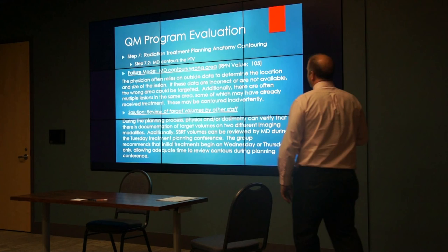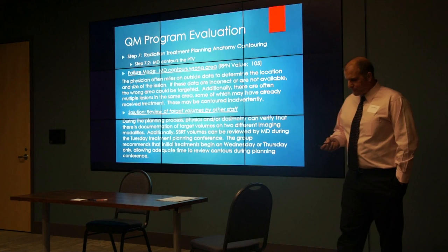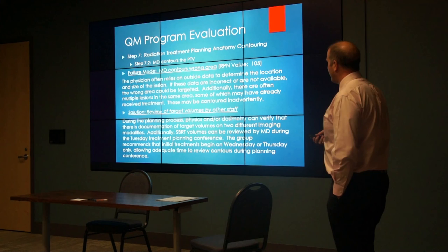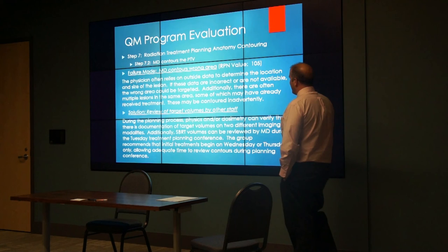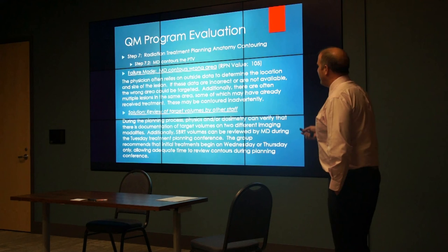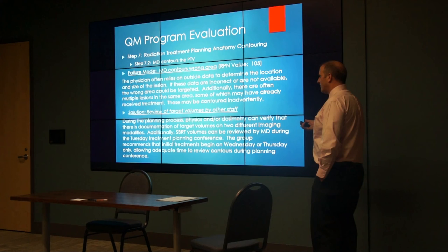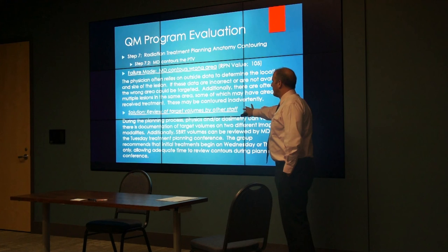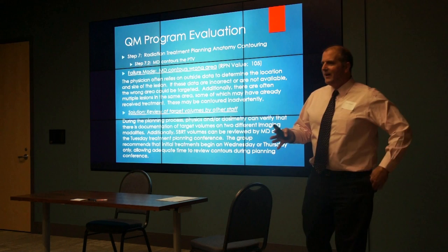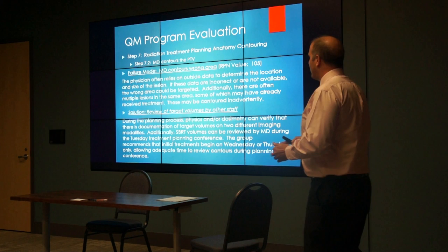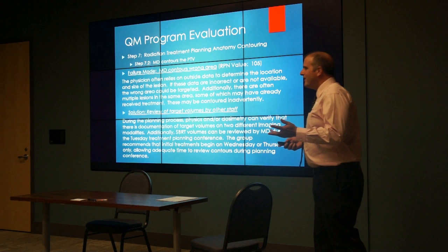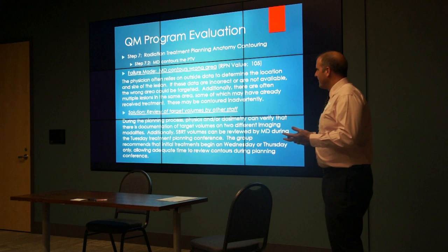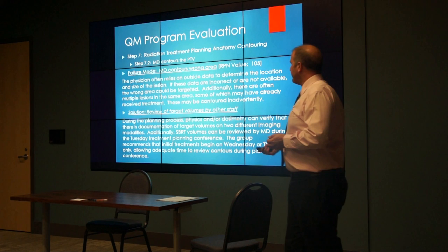The last failure mode was the physician contouring the wrong area. Typically, contours are reviewed at chart rounds—treatment planning rounds—which occur once a week. Sometimes they get changed. The problem is that with SBRT we only give five treatments, sometimes even three. They've already given one or two before the plan gets reviewed at planning rounds, and then we decide the contours are wrong or don't cover enough—we've already given a substantial dose incorrectly. Our very simple solution: make sure target contours are reviewed by the other staff before we treat the patient. We changed our scheduling so the simulator therapist knows the patient can't start until after the Tuesday chart round. None of these changes are very significant conceptually—they're pretty obvious—but they're things we just hadn't come up with until we all came together and went through this process.